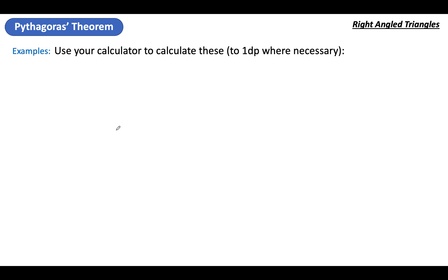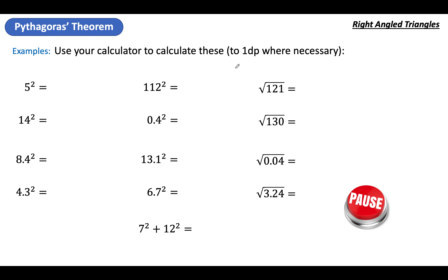Your starter is to use your calculator to calculate these and round them to 1dp — one decimal place — when necessary. Not all of them need it, but some do. Get used to your squared button, which might look like an x with a little box, or an x with a 2. And the square root button, which is exactly what it looks like. Pause and do all of those — please write them down, don't just do them in your head.